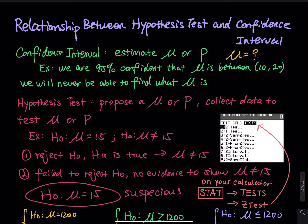The next question is: does that mean we will be able to find out what mu equals to exactly? The answer is no. You are trying to guess what mu is, but you will never be able to find out exactly. My guess is the unknown number is between 10 and 20 — that's it. I am not trying to find out what it equals to exactly.